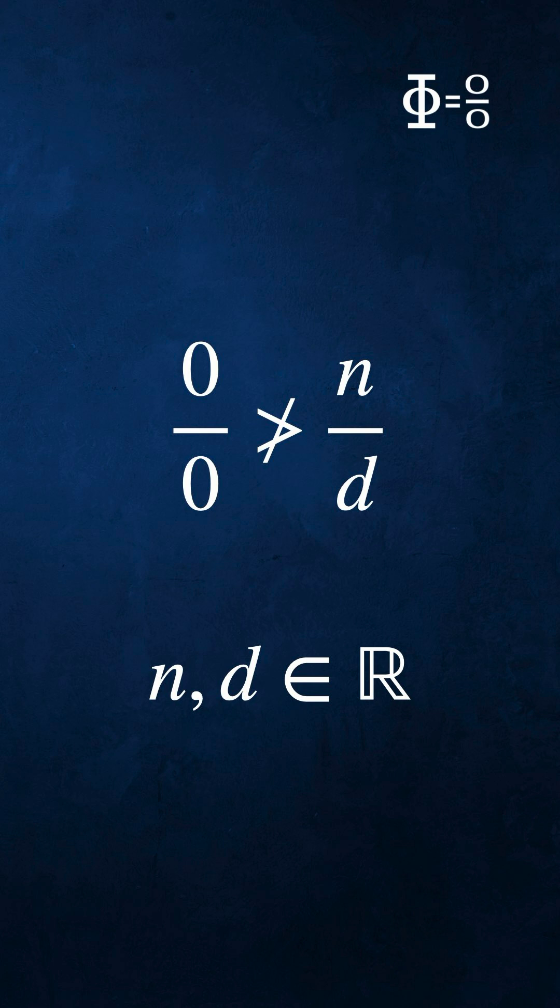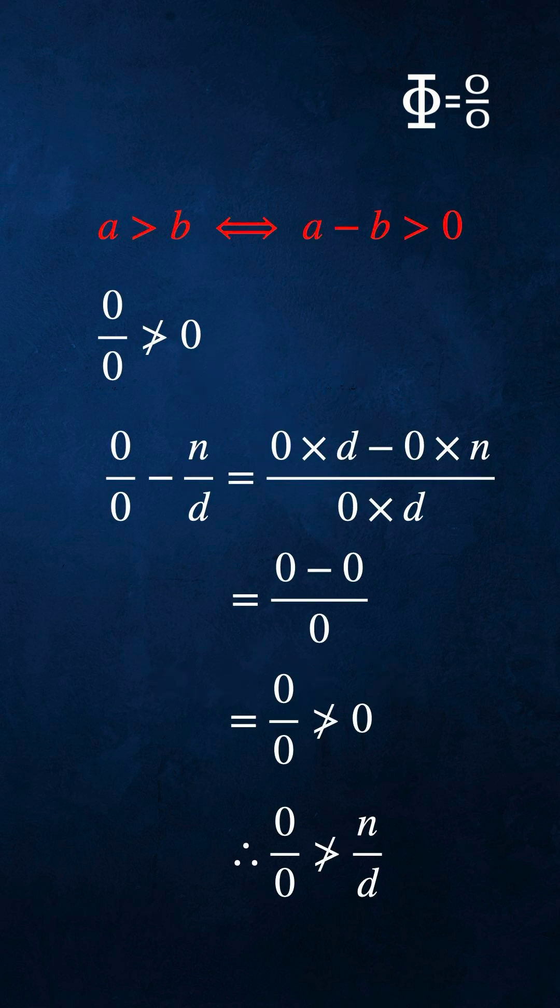Let's prove that 0 over 0 isn't bigger than any fraction with a real numerator n and real denominator d. We take a definition from real arithmetic: a is greater than b if and only if a minus b is greater than 0.